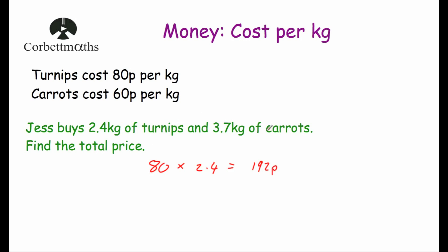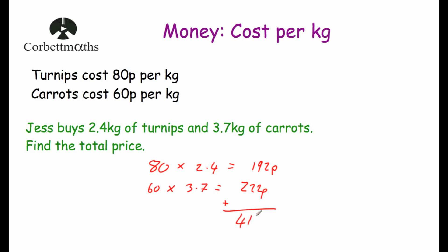For the carrots: 60 pence multiplied by 3.7 gives 222 pence, or £2.22. Adding the two costs together: 192 plus 222 equals 414 pence, which is £4.14. So the total cost of Jess's turnips and carrots is £4.14.